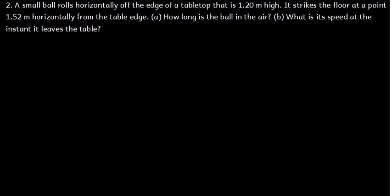Number two, a small ball rolls horizontally off the edge of a tabletop that is 1.2 meters high. It strikes the floor at a point 1.52 meters horizontally from the table edge.